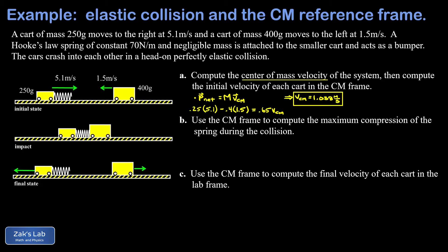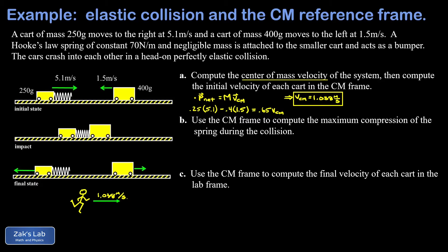Next we find the initial velocity of each cart in the center of mass reference frame. We imagine running to the right at 1.038 m/s — this makes the center of mass look stationary. From this new perspective, the 250-gram cart was moving at 5.1 m/s to the right in the lab frame, but now we're chasing it, so it looks 1.038 m/s slower. Its new initial velocity v1_initial = 5.1 − 1.038 = 4.062 m/s.